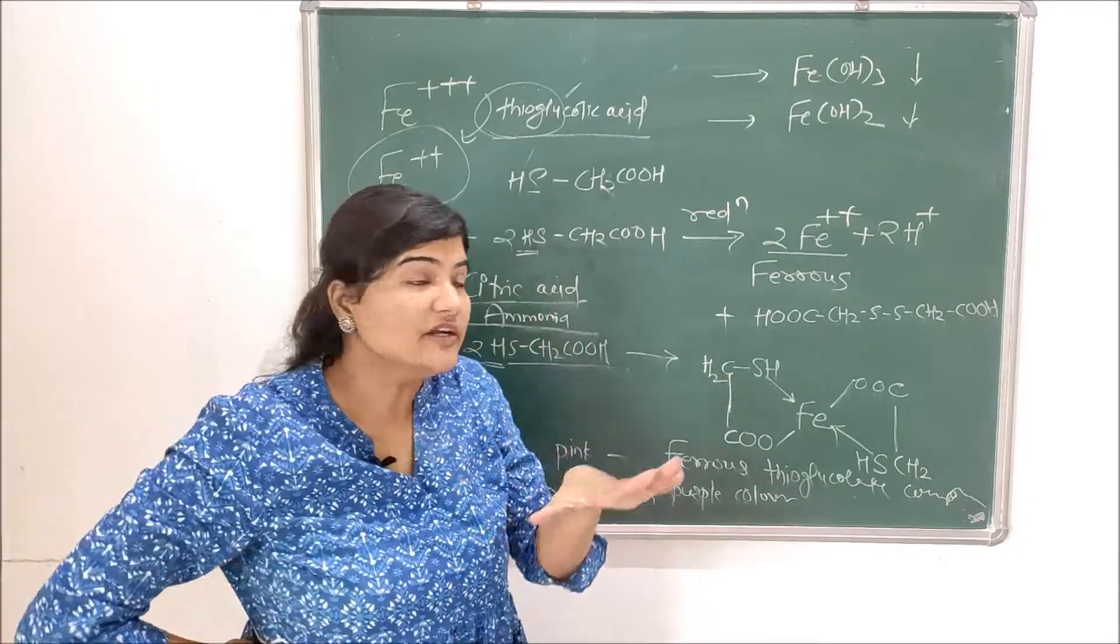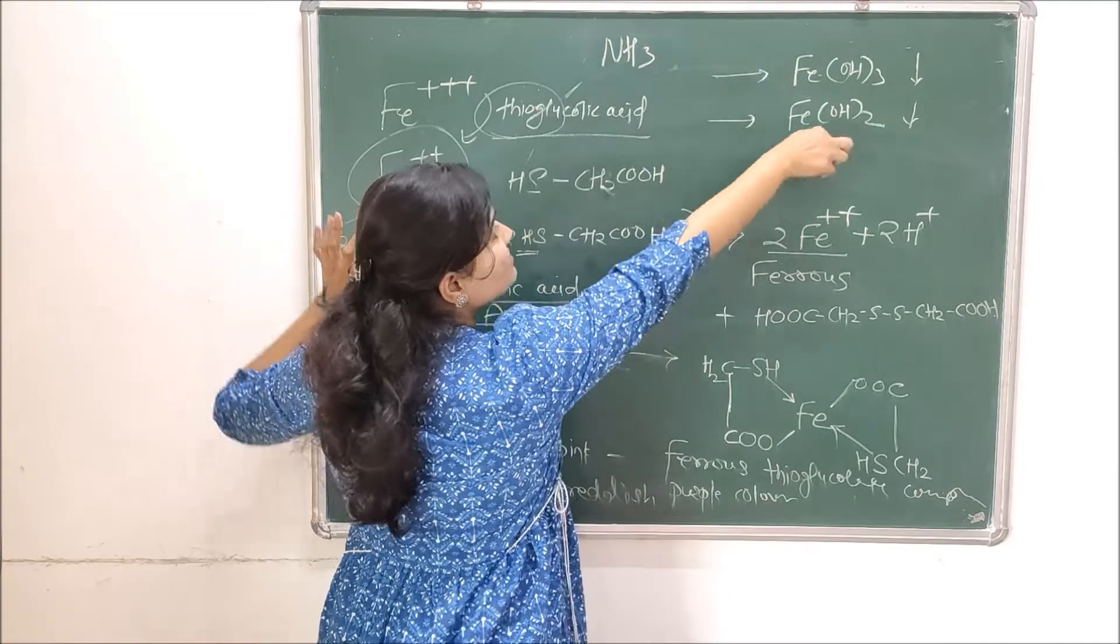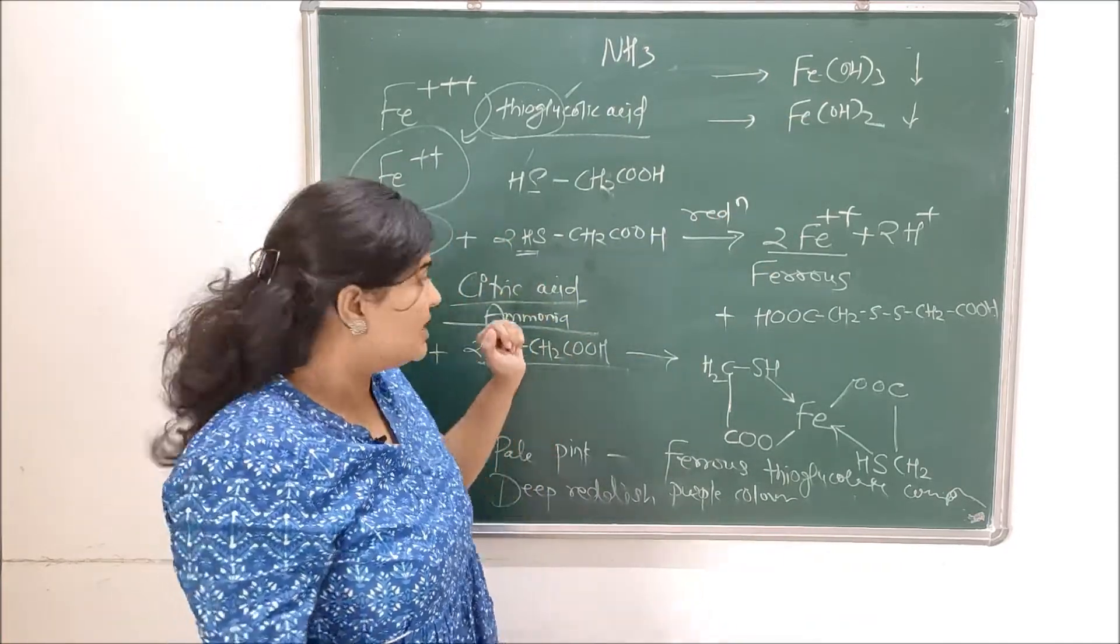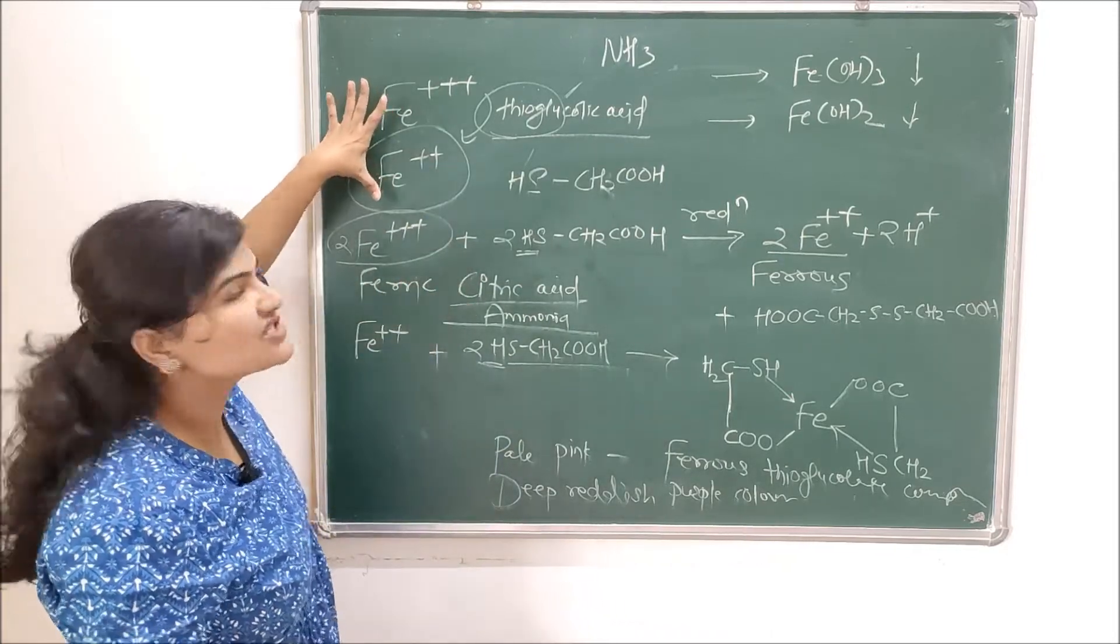So I don't want my iron to react with ammonia and form the precipitates. So what I am doing is I am adding citric acid. Now what citric acid does is it forms a soluble complex with iron.